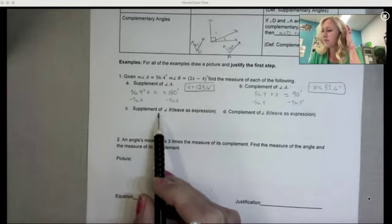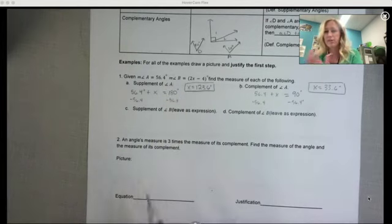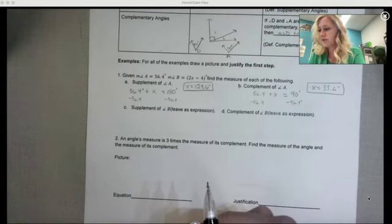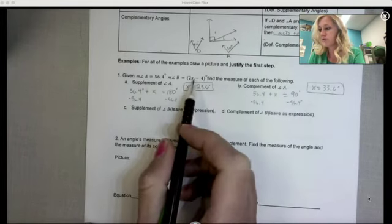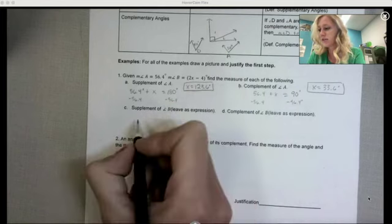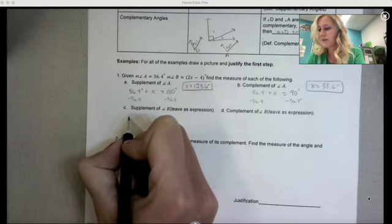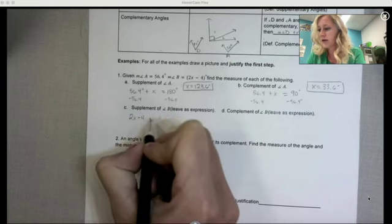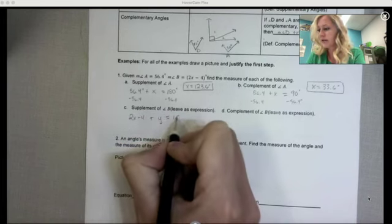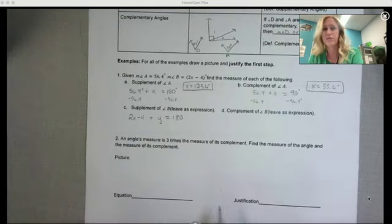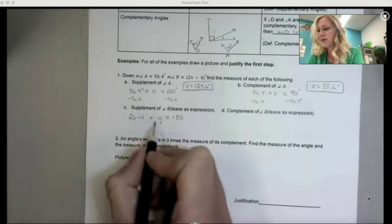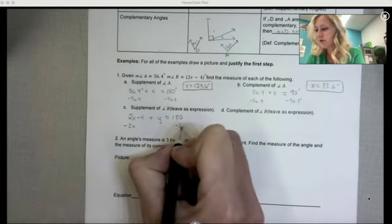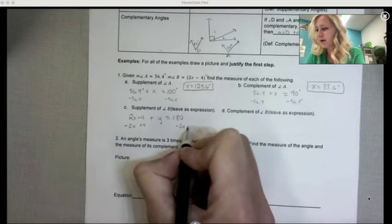Okay, so now we want the supplement of angle B. So here's angle B. We don't have a number for angle B, we have an expression with x, but we're still going to set up the same thing. So I'm actually going to use a different variable though, since x is already involved here. So we're going to say 2x minus 4 plus y equals 180. It says together these angles have to add to 180 if they are supplementary. So I want to get y by itself because y is the supplement.